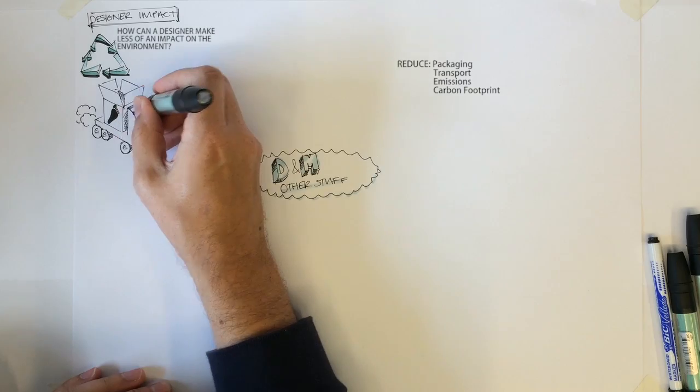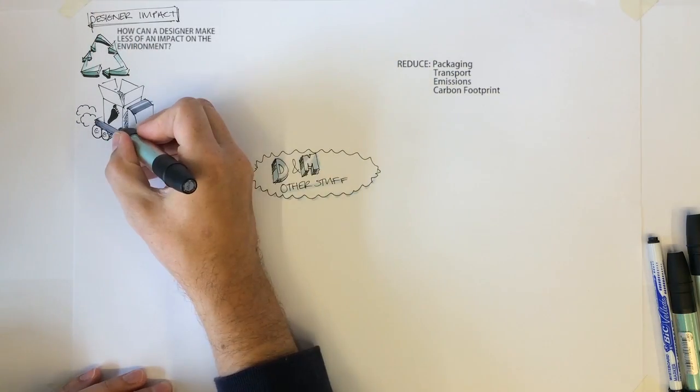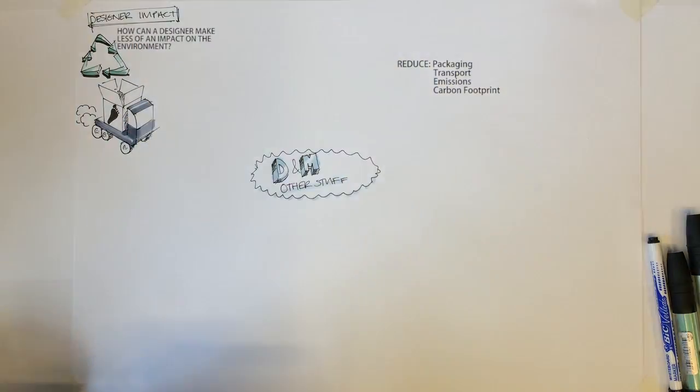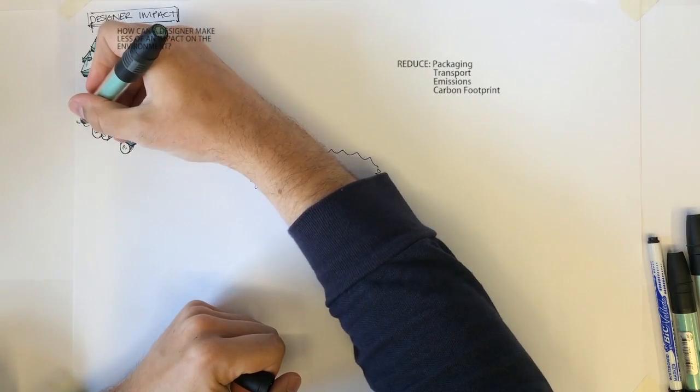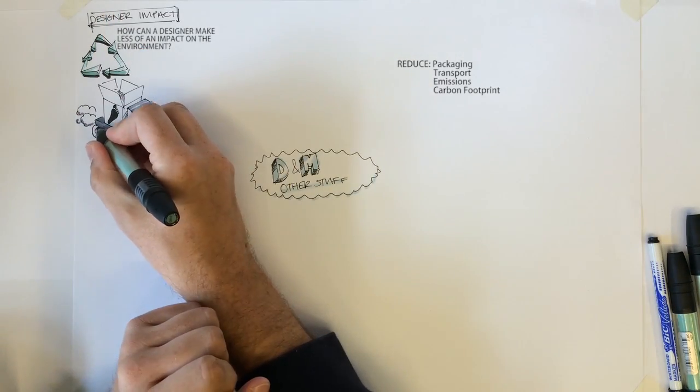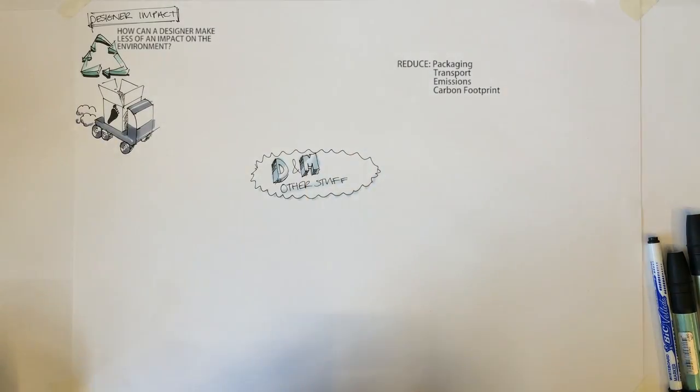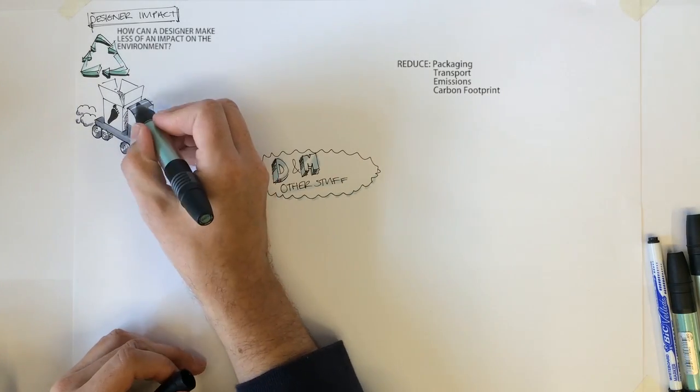Reduce emissions. Can we reduce emissions from our transport as well as create greener factories? Reduce carbon footprint. Looking at the whole design, make and distribute process, can we work out ways to create less strain on the environment?